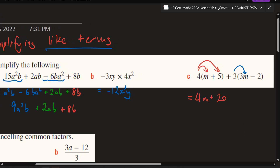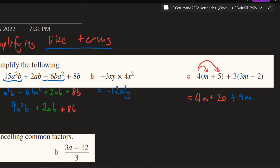Next one — you've got 3 times 3m, so just multiply the big numbers. Francis, what's 3 times 3? Good — not 6. And then m — you can't multiply with anything, so it just becomes m. So it's 9m. And then 3 times negative 2 — watch out for that operator. What is 3 times 2? 6. Because it's negative, it's negative 6.